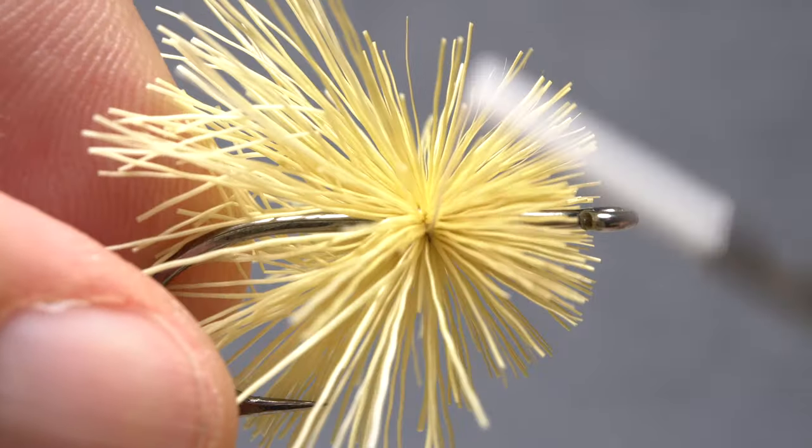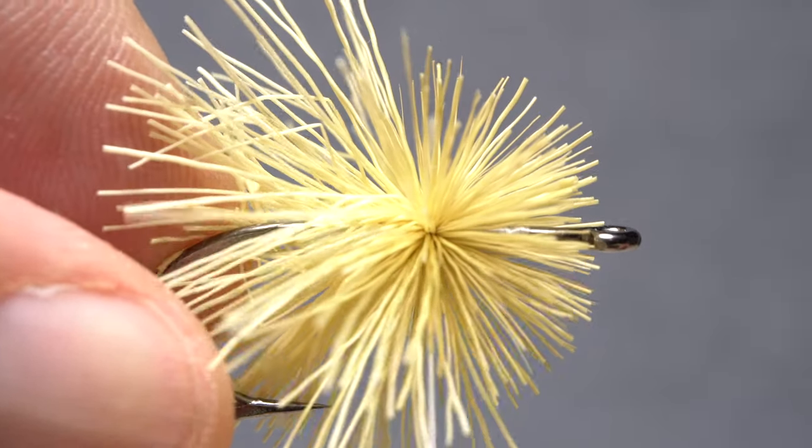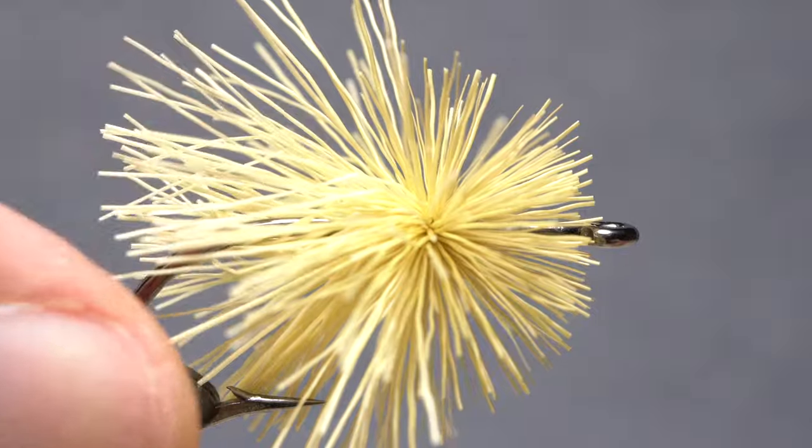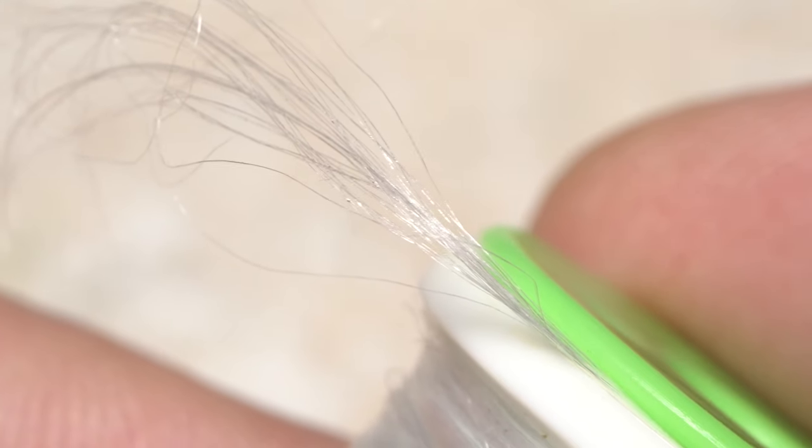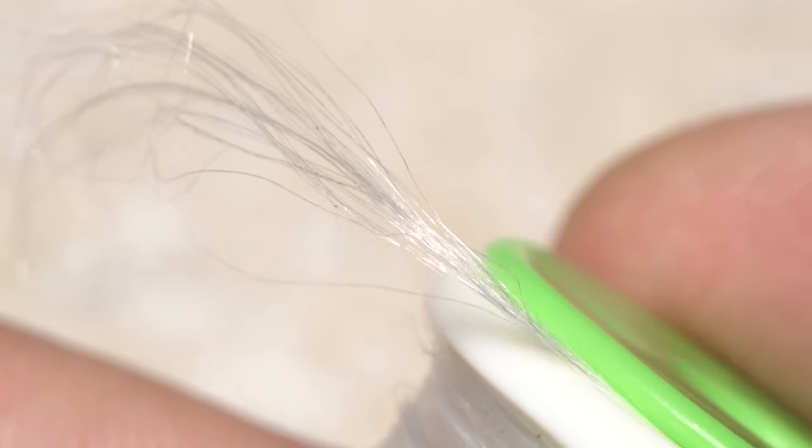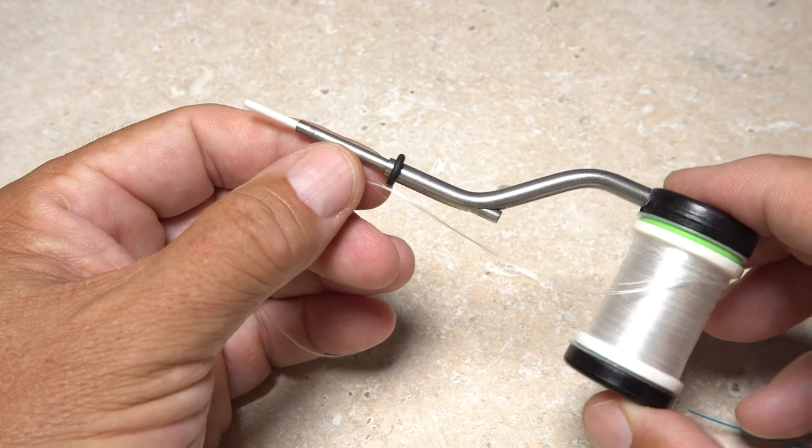They're insanely strong, but have some drawbacks that tend to irritate many fly tiers. Gel spun threads are made up of many finer filaments that can cause problems even when it comes to threading a bobbin tube.